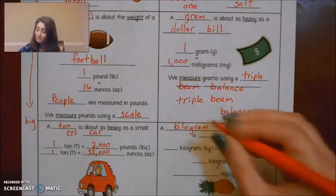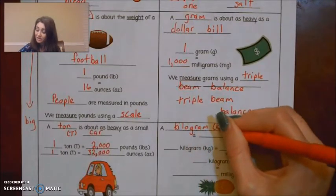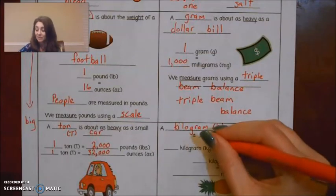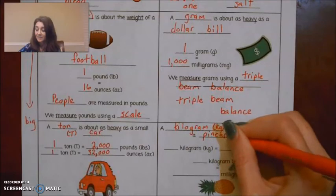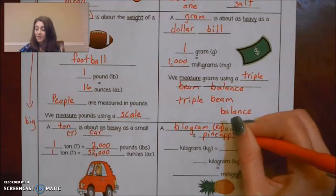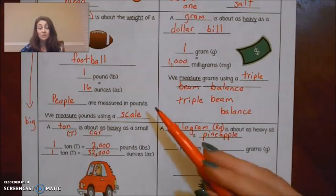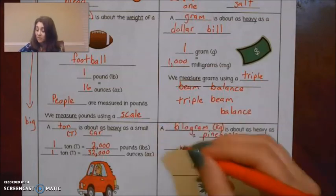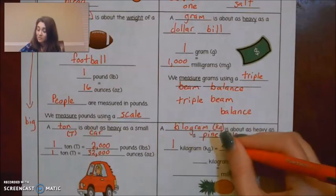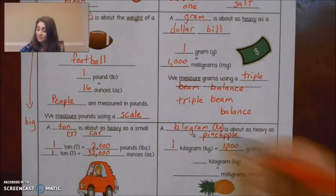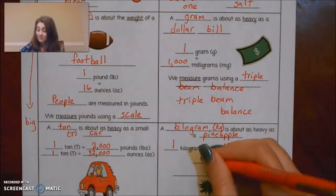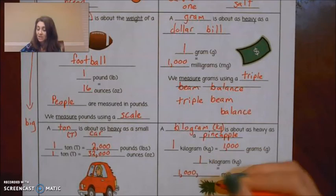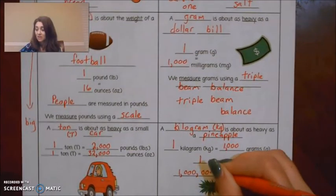It's about as heavy as a pineapple. And if you're thinking about kilograms and pounds, a kilogram is a little over two pounds. One kilogram equals 1,000 grams. One kilogram equals 1,000,000 milligrams.